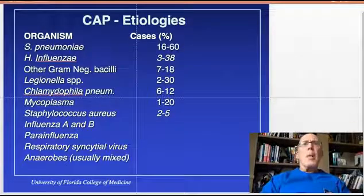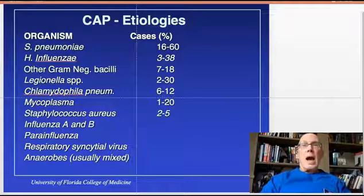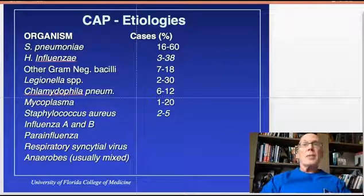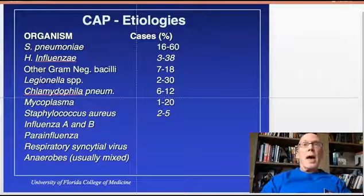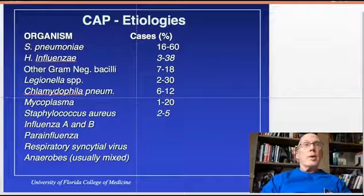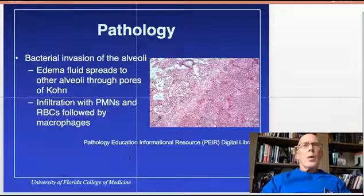The most common bacteria to cause pneumonia is Streptococcus pneumoniae. Second is Haemophilus influenzae, followed by other gram-negative bacilli including Legionella. Rounding out the most common pathogens are Chlamydophila pneumoniae, Mycoplasma, and Staphylococcus aureus.